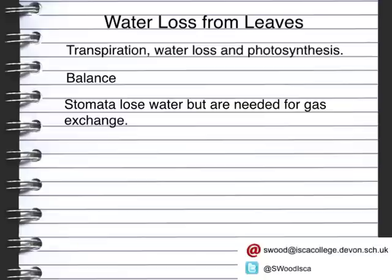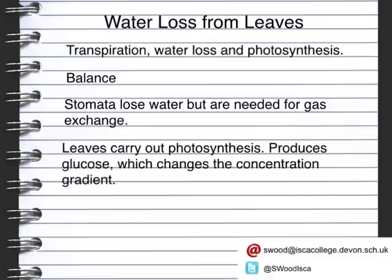The stomata distribution also varies depending on the area the plant lives in and the amount of water it requires. When plants are exposed to large amounts of sunlight, they need a bigger supply of water. Because the leaves carry out photosynthesis, that's where most of the water ends up. The production of glucose changes the concentration gradient, meaning osmosis brings more water up to the leaves, the guard cells become turgid, and the stomata open fully — allowing more gas exchange, more photosynthesis, and a bigger concentration gradient.